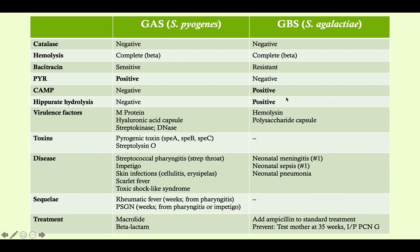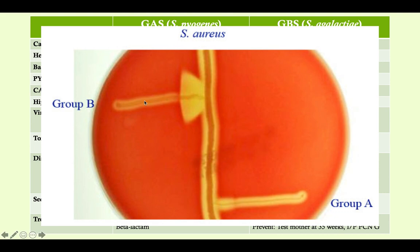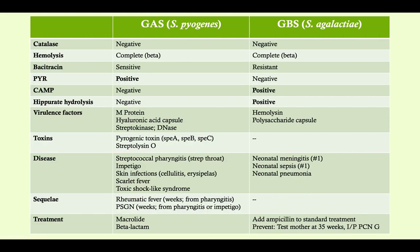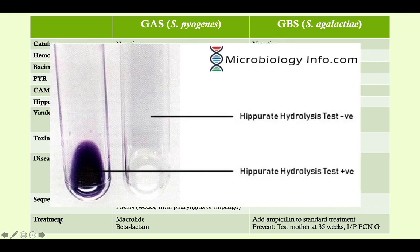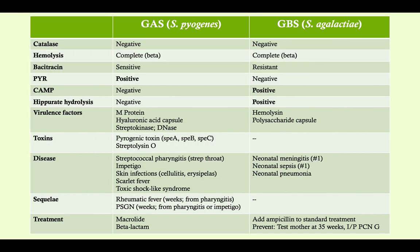What you need to know is what CAMP will look like. You plate Staph aureus and then plate your beta hemolytic strep in question. If you're dealing with group B strep, you'll see an arrowhead of enhanced hemolysis — that is CAMP positive. It does not mean cyclic AMP. If you don't see that arrowhead, it's CAMP negative and you're dealing with group A strep. For hippurate hydrolysis, you add a reagent; if it turns purple it's positive. Simply know that group B strep is hippurate positive.